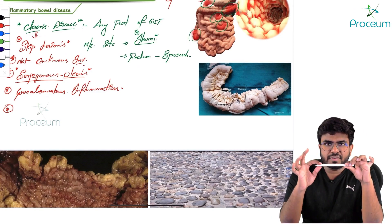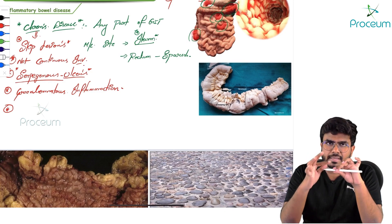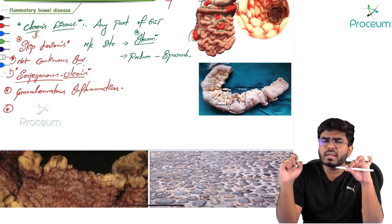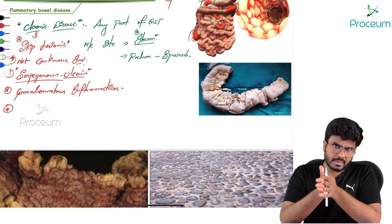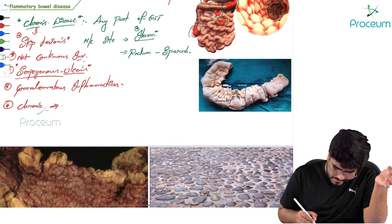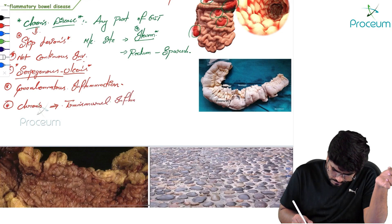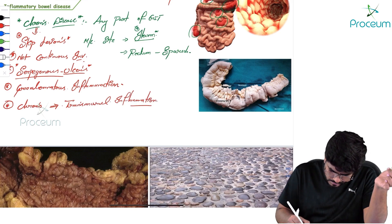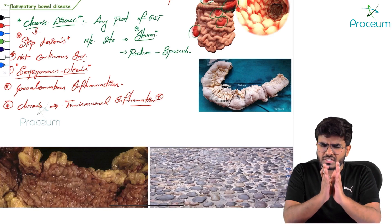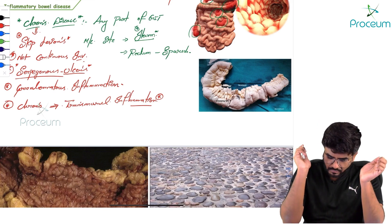Now, in the GIT there are layers: mucosa, submucosa, muscularis, and serosa. In Crohn's disease, is it a transmural inflammation or a superficial inflammation? Crohn's disease is an example of transmural inflammation, meaning all the layers — mucosa, submucosa, muscularis, and serosa — are going to be involved in the inflammation.